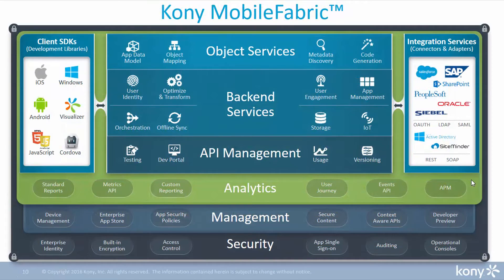Mobile Fabric is the middleware handling all the API management, analytics, security, integration, and object services. It pretty much handles the data and service components between the actual mobile device and the backend services, as you can see here on the right.